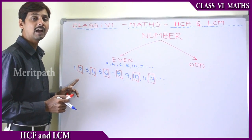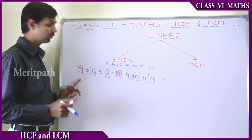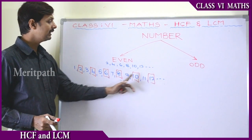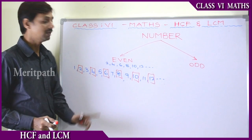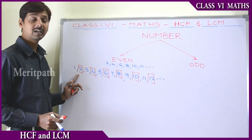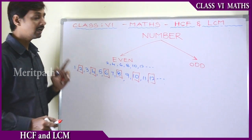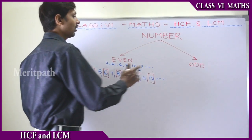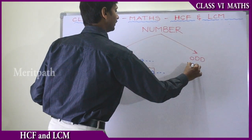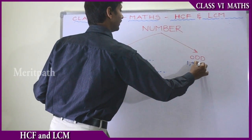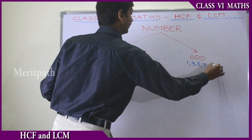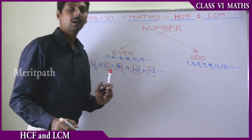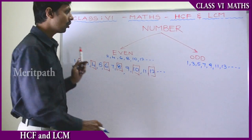Now let's see some numbers that are left out — numbers not divisible by 2. Those are 1, 3, 5, 7, 9, 11, 13, and so on. These numbers are not divisible by 2, so they are called odd numbers. Odd numbers: 1, 3, 5, 7, 9, 11, 13, and so on.